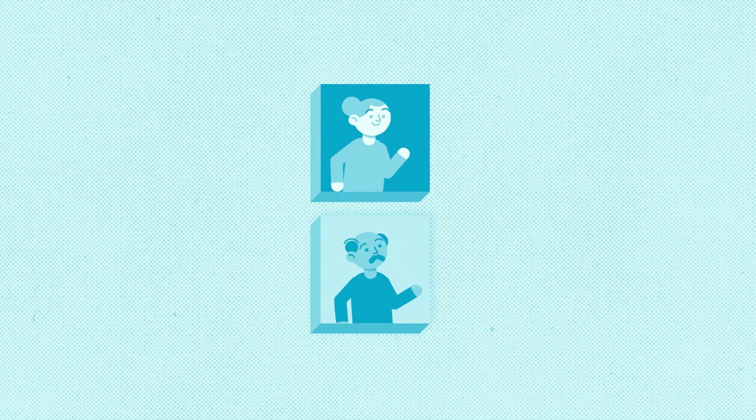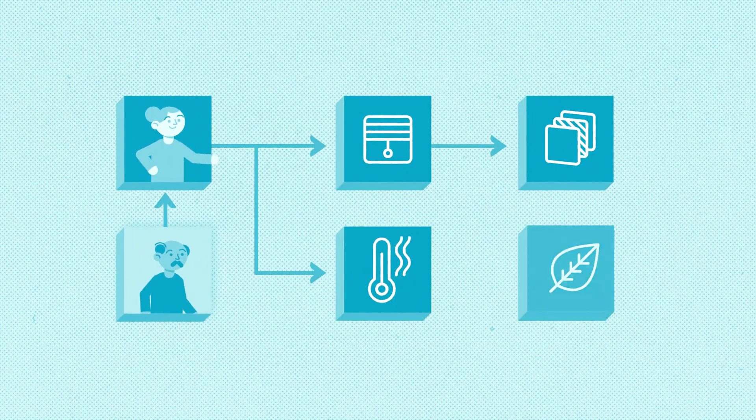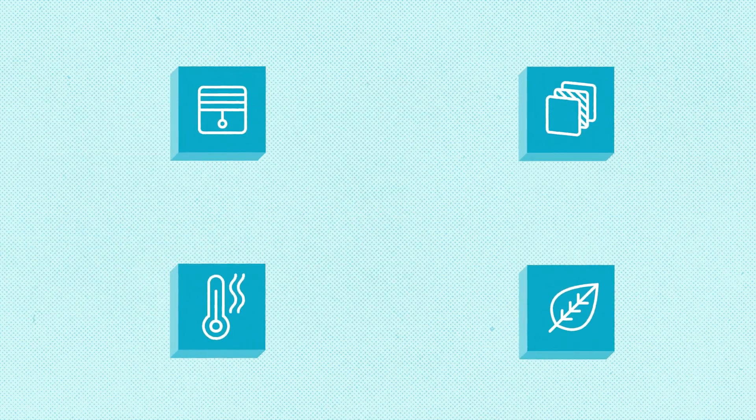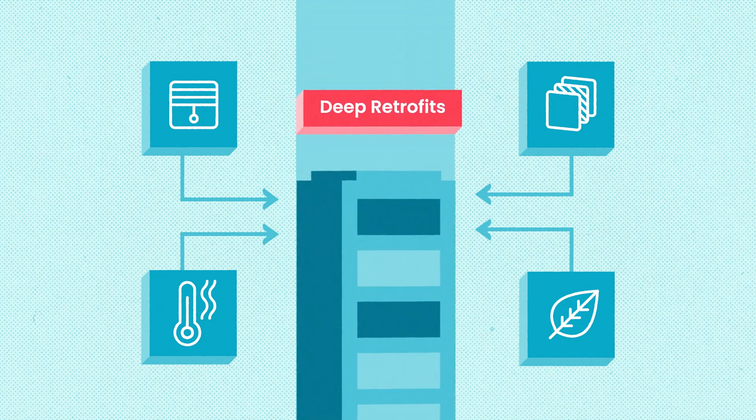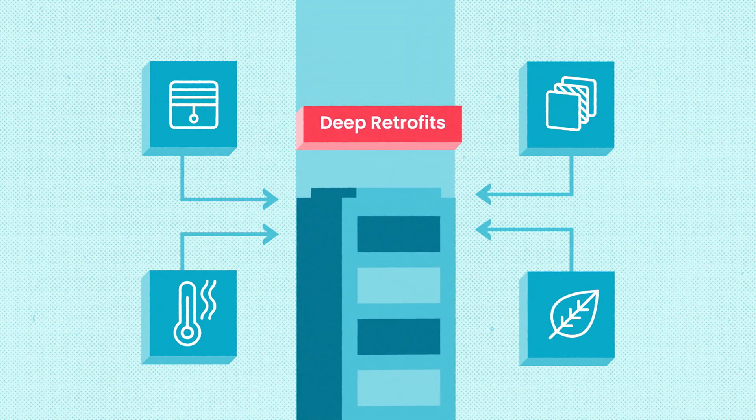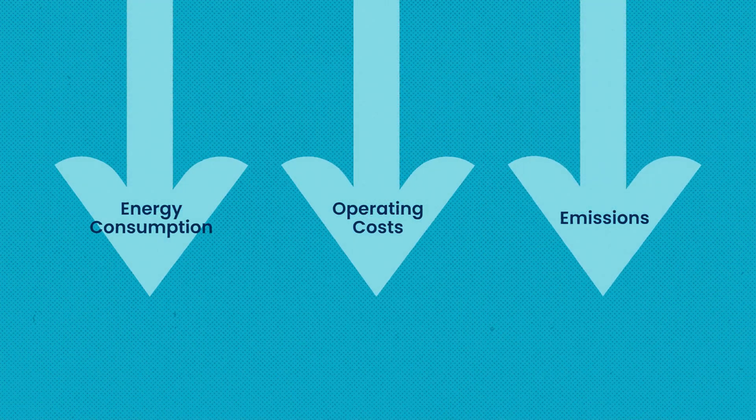Alberta Ecotrust Retrofit Accelerator is a free coaching program designed to guide building owners and managers through sustainable building upgrades, known as deep retrofits. These go beyond standard upgrades and take a whole building approach to optimizing a building to reduce its energy consumption, operating costs, and emissions.